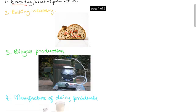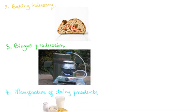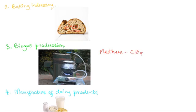The third application is biogas production. Decomposer bacteria act on undigested wastes of mammals, birds, and plants to produce a mixture of methane and carbon dioxide. In this picture, this is the biodigester — the structure in which decomposition takes place — and methane is released, then collected through a pipe and supplied to the cooker.